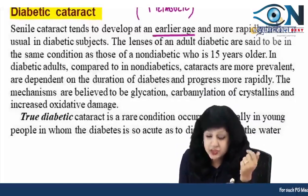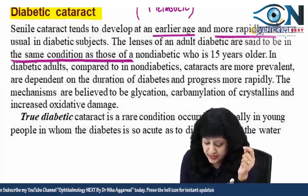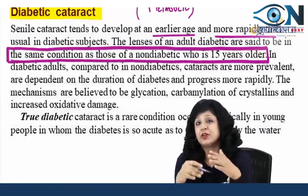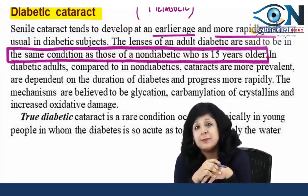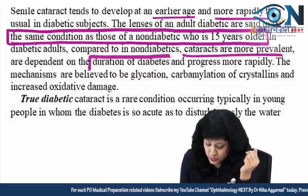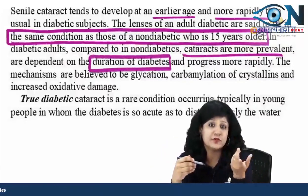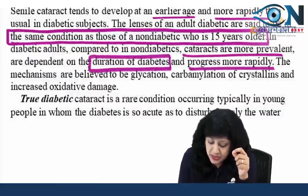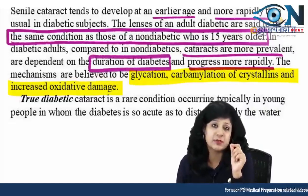Senile cataract tends to develop at an earlier age and more rapidly in diabetics. The lenses of adult diabetics are said to be in the same condition as those of a non-diabetic who is 15 years older. Diabetics have accelerated aging changes and can have pre-senile cataract. Cataracts are also more prevalent compared to non-diabetics, and it depends on the duration of diabetes. The mechanisms believed responsible are glycation, carbamylation of crystallins, and increased oxidative damage.